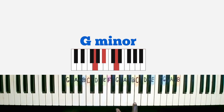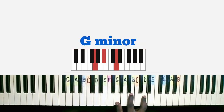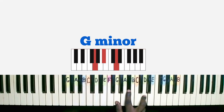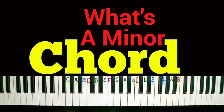For G minor, let's grab G major first. G major is G, B, and D. We reduce the third, which is B, by a half step to get B flat. So we have G, B flat, and D to give us G minor.